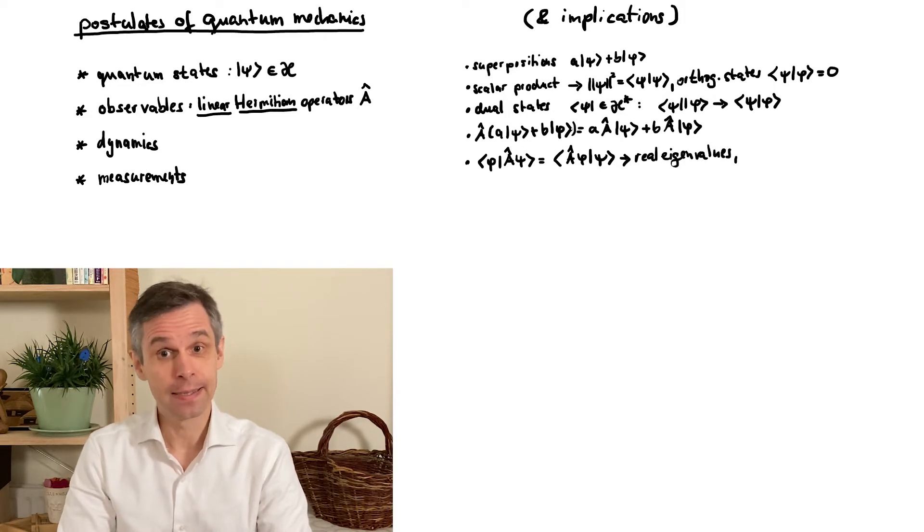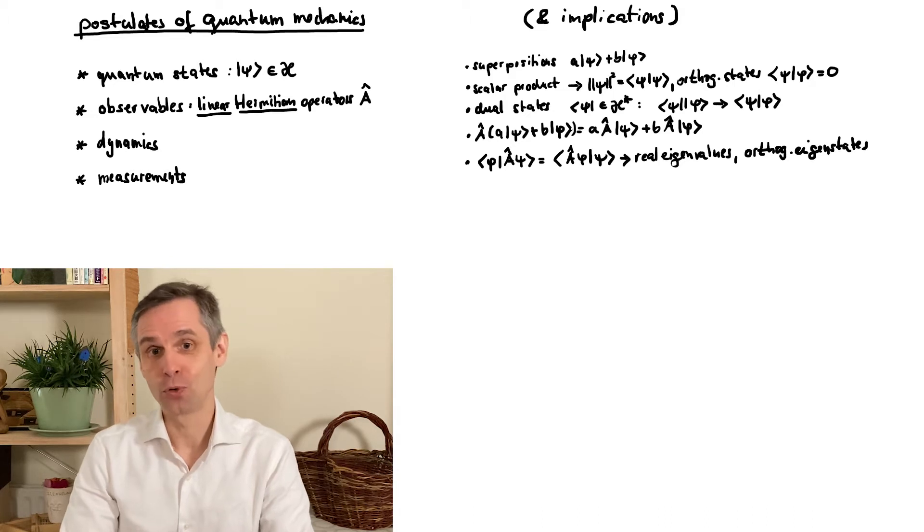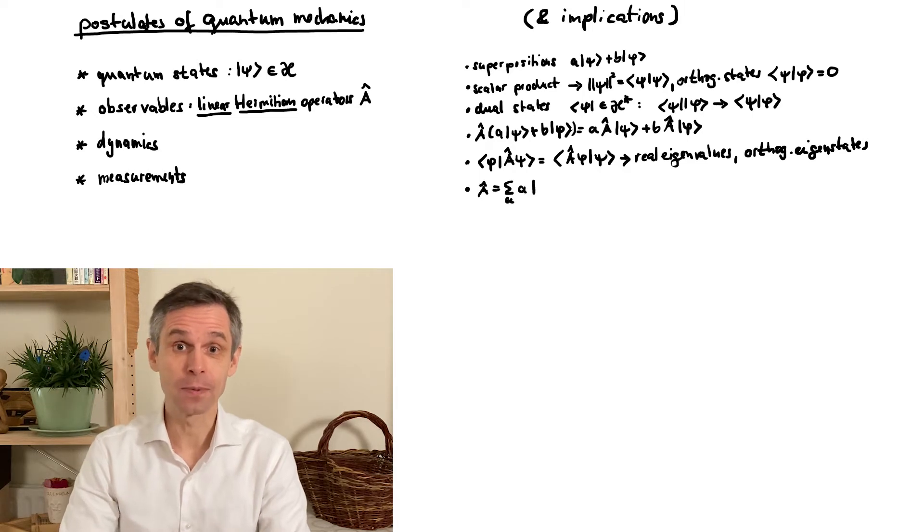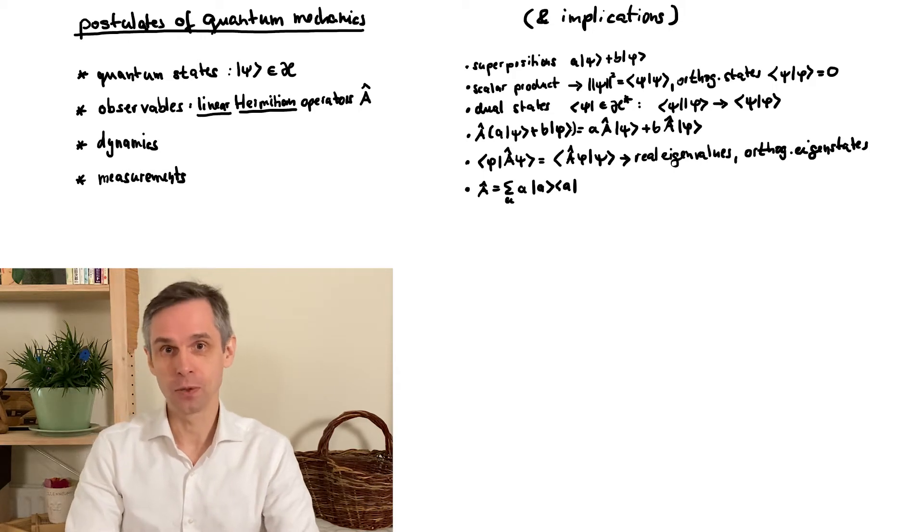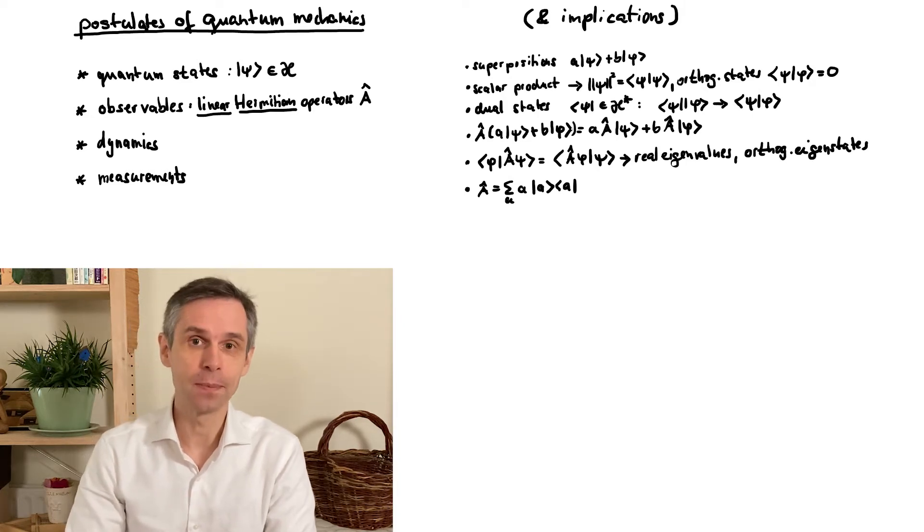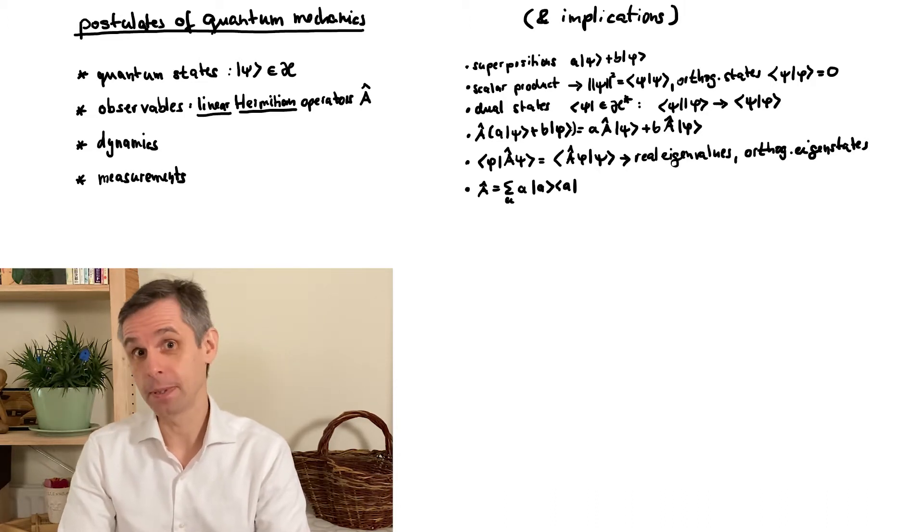Now the consequence of this is that the eigenvalues of these operators are real, and that eigenstates with different eigenvalues are orthogonal to each other, as we have already proved before. And we use this to show that we can then write these operators in terms of these quantities in a very compact form, assuming for the moment that the eigenvalues are discrete and non-degenerate.